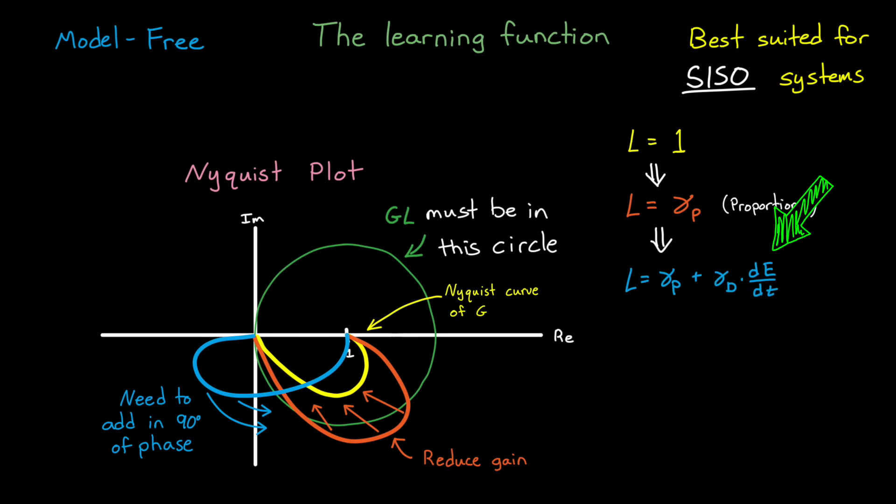Now we can scale this term by gamma_d, and between that and the proportional term, we can find some combination that keeps the Nyquist curve of gl safely within the learning circle.